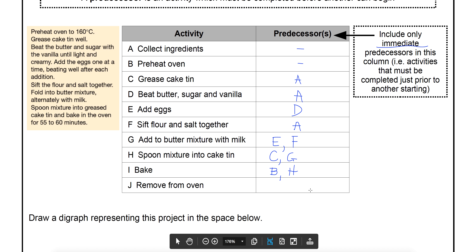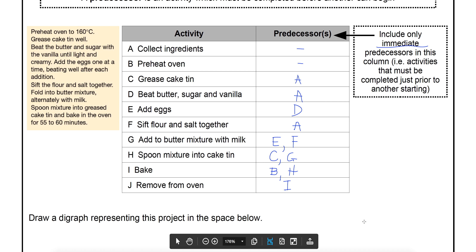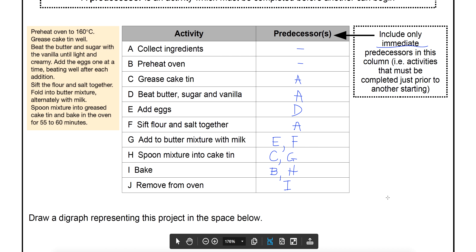These questions are never going to take you this long — this is just a longer one because I'm trying to demonstrate why things are predecessors. Removing from the oven (J) requires it to be baked first, so the only immediate predecessor is I. Generally, you're going to be given a completed table like this, or given a network from which you identify the predecessors. So filling in predecessors in a table will actually be a lot easier than what I've just done.